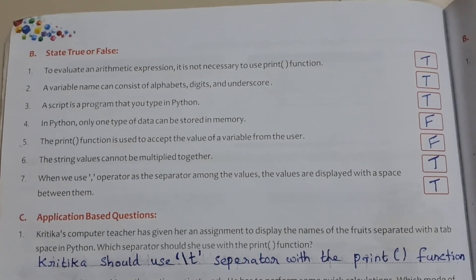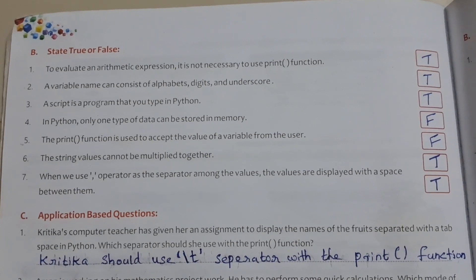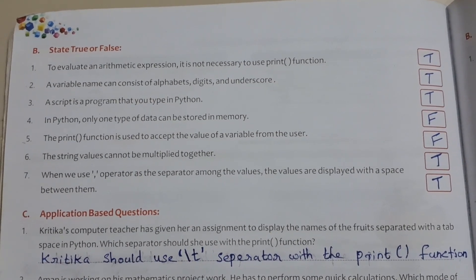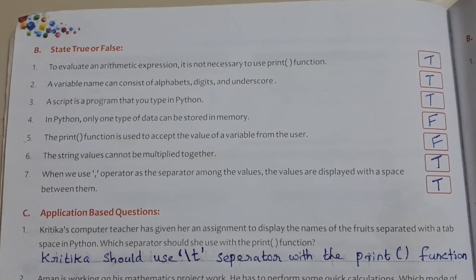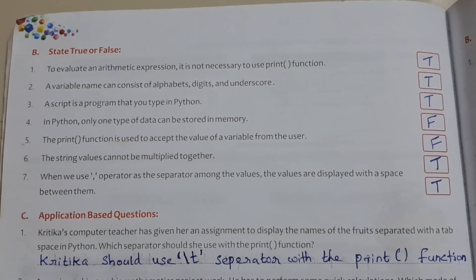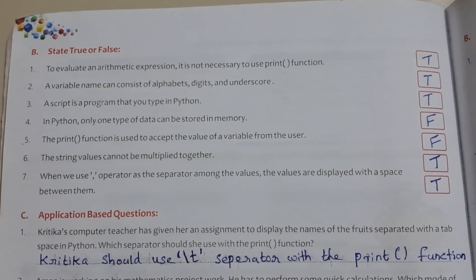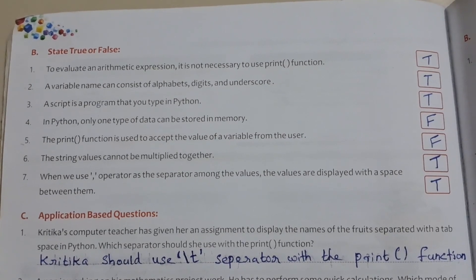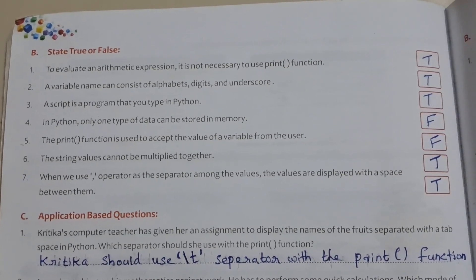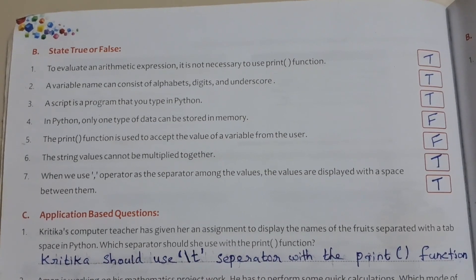The print function is used to accept the value of a variable from the user. Answer is False — we use the input function. The string values cannot be multiplied together. Answer is True. When we use the comma operator as the separator among the values, the values are displayed with a space between them. Answer is True.